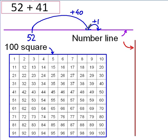So, that I've added 41 altogether. 52, add 40, gives us 92. Add 1, gives us 93. So, our answer is 93.